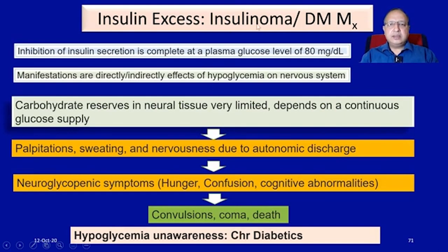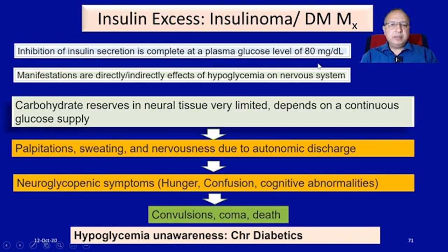Insulin excess can be due to insulinoma or can occur in diabetes management. Inhibition of insulin secretion is complete at a plasma glucose level of 80 milligram percent. That means when a plasma glucose level of 80 milligram percent is achieved, the physiological mechanism functions such that there is no further requirement of insulin to reduce blood glucose.